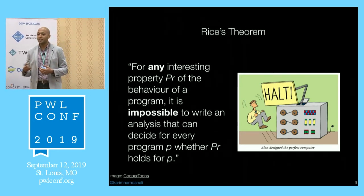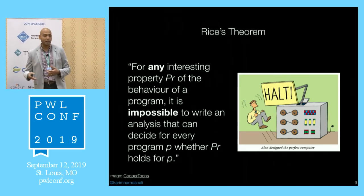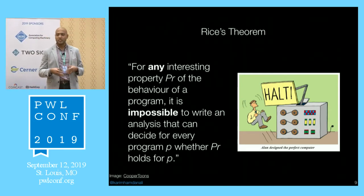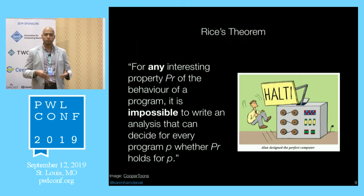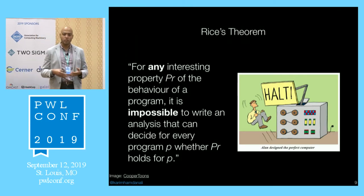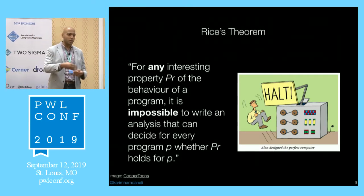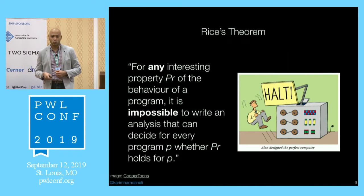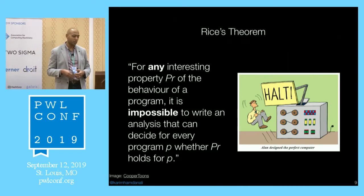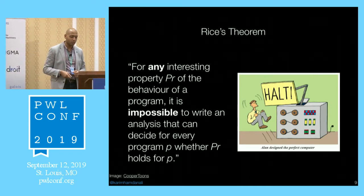An 'interesting' property here means something about the semantics of the code that doesn't always hold true and isn't always false — not something syntactic like whether the program has an if statement or a for loop, which you can determine just by looking at the code. It's something semantic about the program.